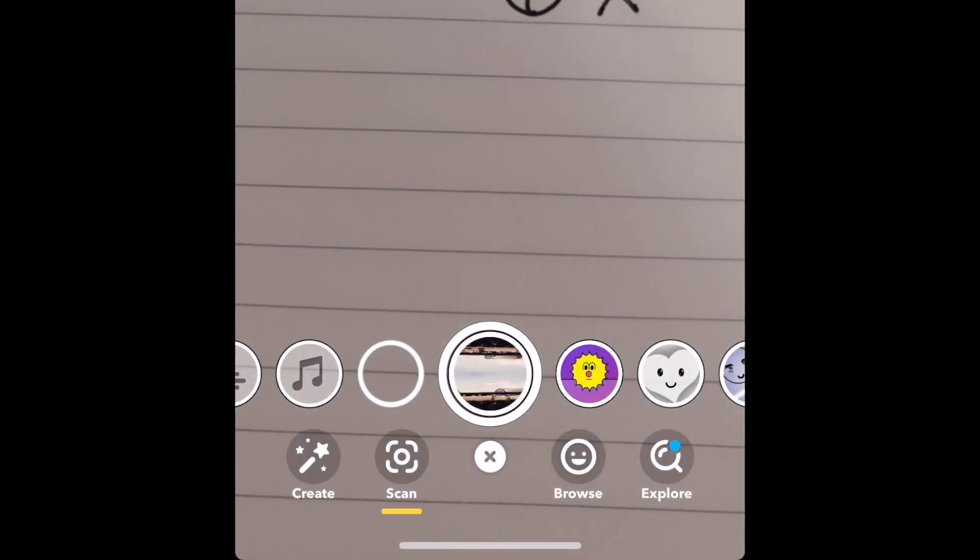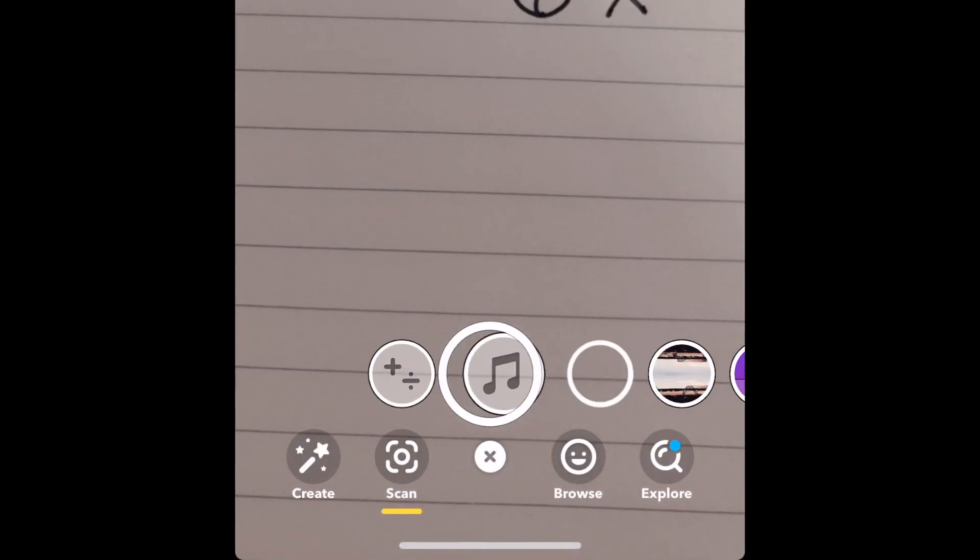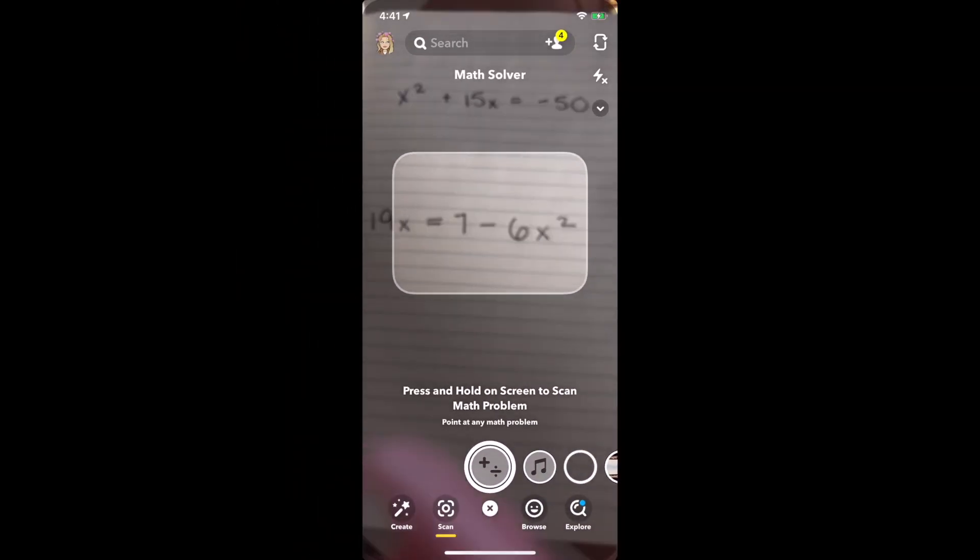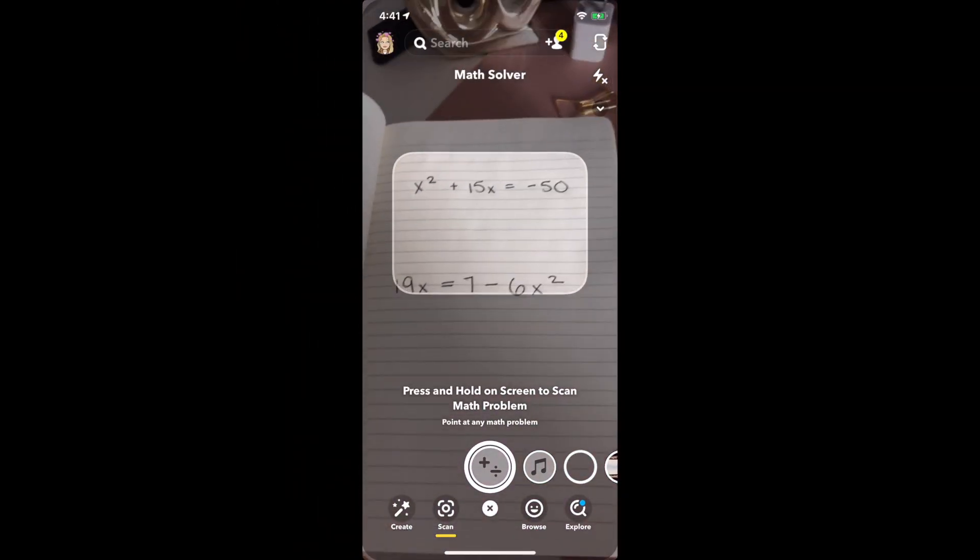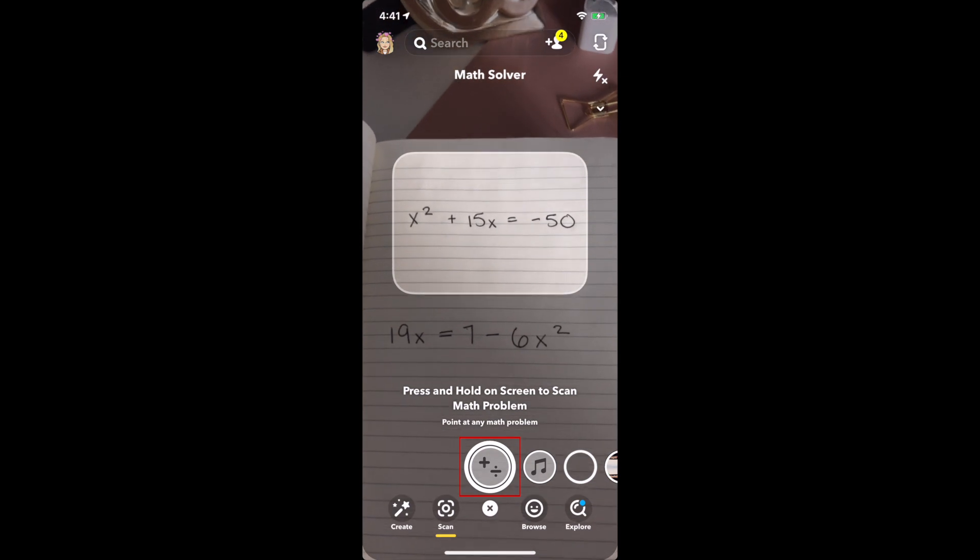Scroll all the way to the left to select the Math Scan feature. Now, center the equation window over the math problem you're trying to solve. Tap the shutter button to scan.